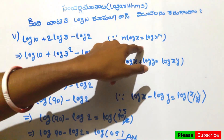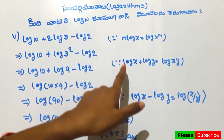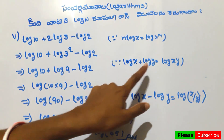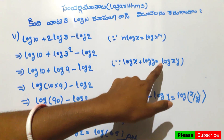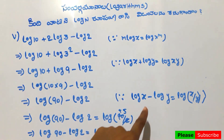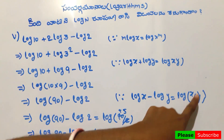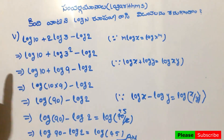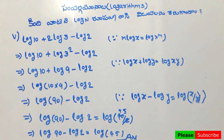The three formulas used in this problem are: m log x equals log x to the power m; log x plus log y equals log x into y; and log x minus log y equals log x by y.